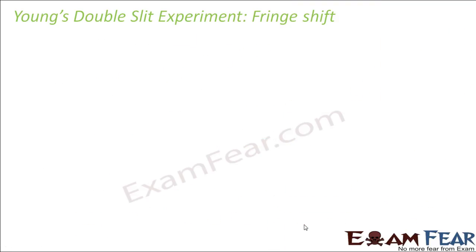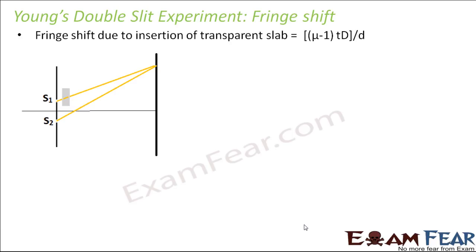The next thing we discuss is what happens when we introduce a slab in the path of one of the waves. As seen in the diagram, a transparent slab is placed in the path of one wave. In this case, the entire fringe pattern seen on the screen gets shifted. This slab has a refractive index mu and a thickness t.